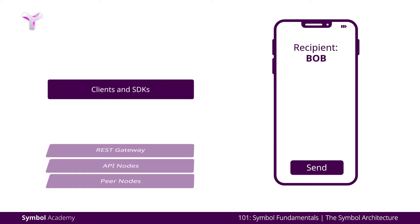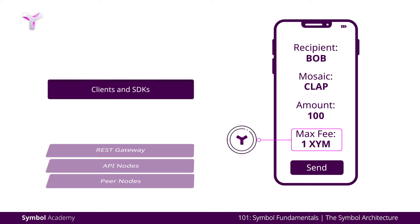She enters Bob as the recipient of her digital asset, the claps created as a digital asset on Symbol, 100 as the total amount of claps she wants to send, and the maximum amount of fee she is willing to pay for this transaction to get through. The transaction fee must always be paid with XYM, no matter what mosaic she is sending, because XYM is the currency native to the Symbol blockchain, which is also a mosaic. A transaction fee is used to incentivize and pay validators to process the transaction.